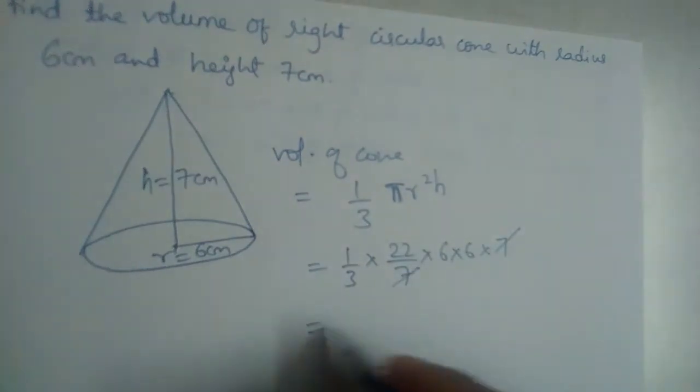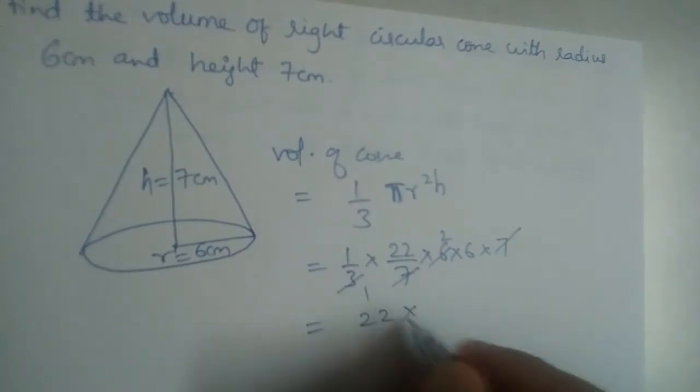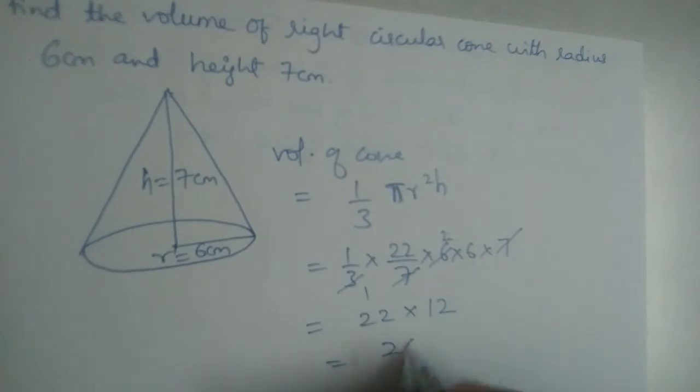The 7 will get cancelled. Here 3 and 6 simplify, so 22 times 2 times 12 gives us 264 cubic centimeters.